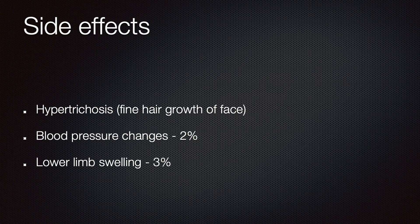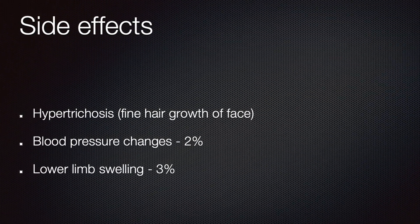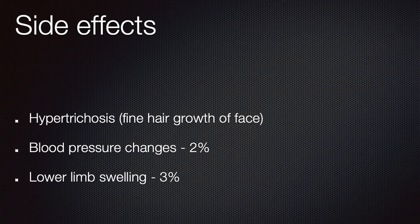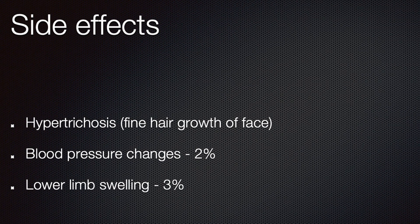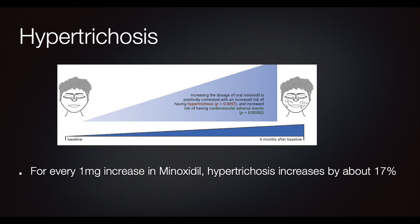What adverse effects do we need to be aware of? Most are dose dependent. The commonest is hypertrichosis — fine hairs on the face. There are blood pressure changes, but since we use doses below 5 milligrams the effect on blood pressure is very low — only about 2%. Fluid retention causing peripheral limb edema occurs in about 3% of those who take it, particularly because the dose is low. It also seems to increase terminal hair density in the beard area in men, which many patients actually welcome.